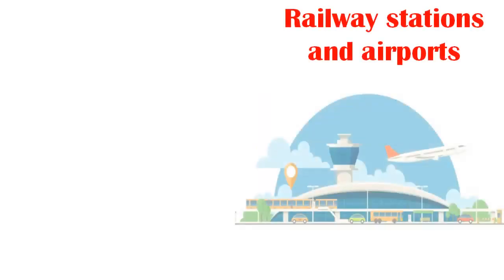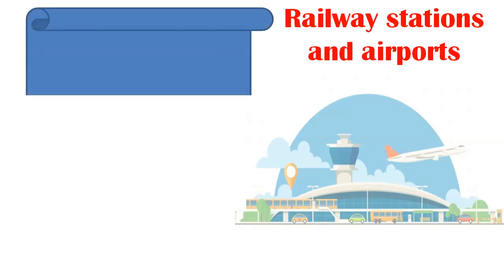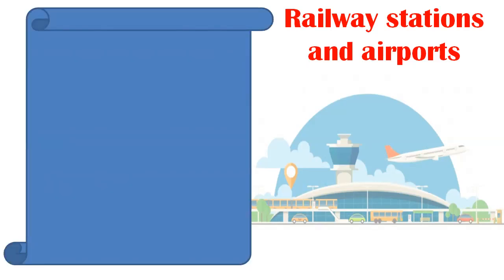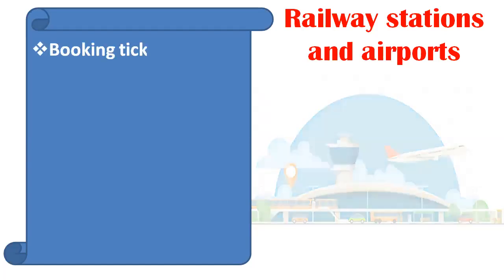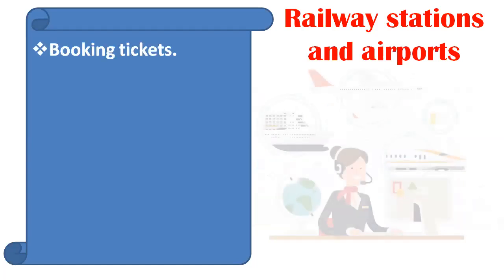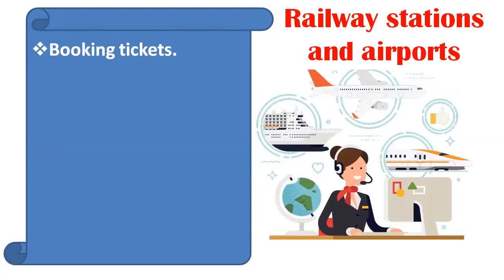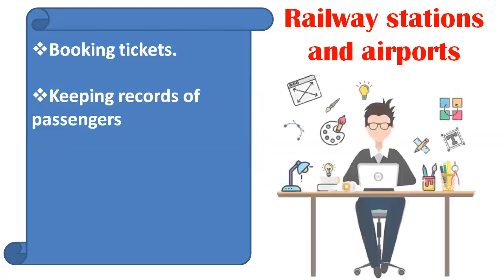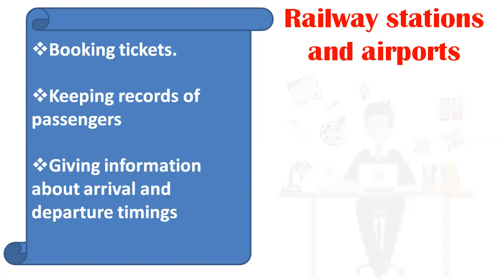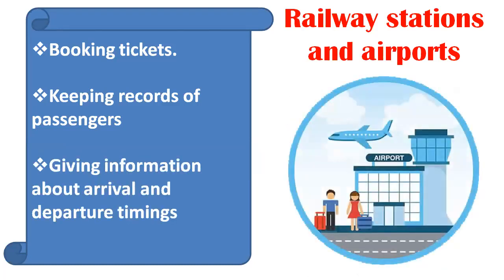Next, railway stations and airports. Nowadays many people are booking tickets through computer. Computer helps to keep records of all passengers, and it gives information about arrival and departure timings.